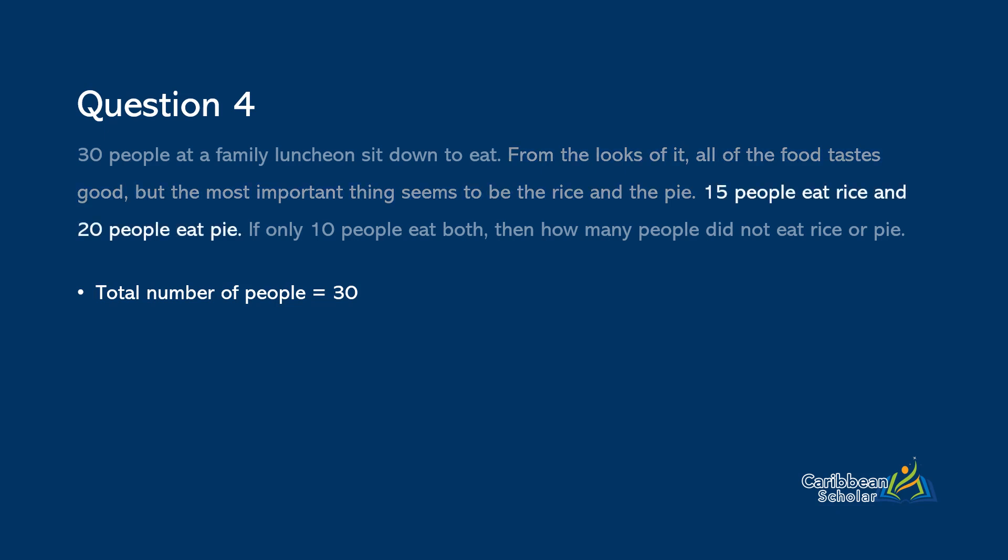Okay, so sentence number three. Fifteen people eat rice and twenty people eat pie. Okay, so this is good information. So we write down that there are fifteen people who eat rice and there are twenty people who eat pie. These should actually be saying the number of rice people and the number of pie people, but that is okay. Let's move on to the last sentence. The sentence is actually the most important one because it contains the question, the actual question. It tells you what you should be looking to solve. And it reads, if only ten people eat both, then how many people did not eat rice or pie?